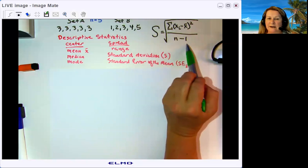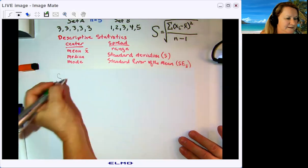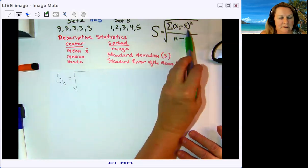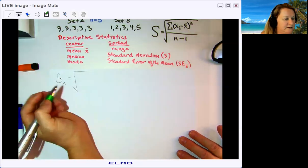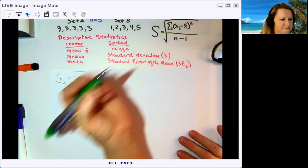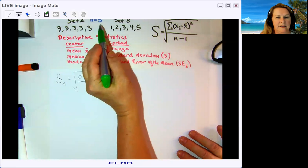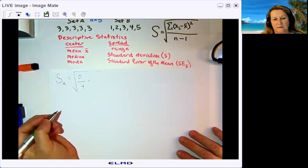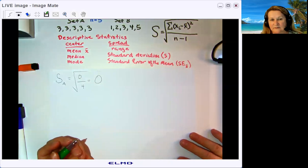Let's calculate the standard deviation for data set A first, since it's easier. Each data point is the same as the mean, so for each one, x sub i minus the mean equals zero. Zero squared is zero, and when you add them all up you get zero. The denominator is n minus one, which is five minus one, or four. So the standard deviation is the square root of zero over four, which is the square root of zero — that's zero.